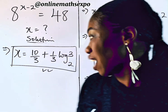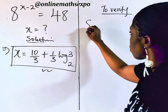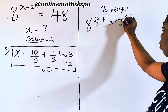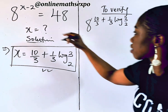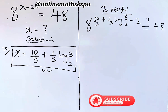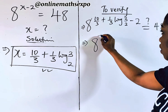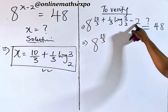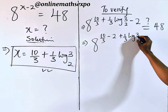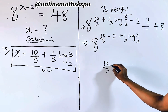Now let's verify by plugging this x value back into the left side to see if it gives us 48. So we have 8 to the power of (10/3 + (1/3)·log base 2 of 3) minus 2. Simplifying the exponent: 10/3 minus 2 equals 10/3 minus 6/3, which gives 4/3. So we have 8 to the power of 4/3 plus (1/3)·log base 2 of 3.